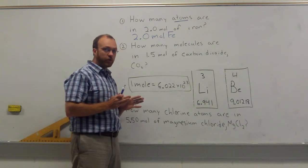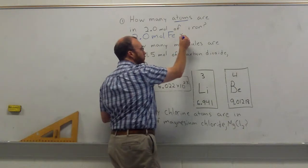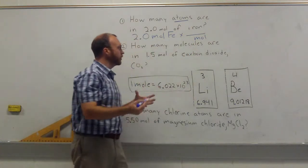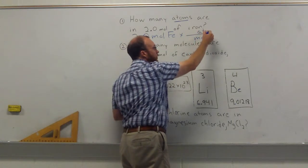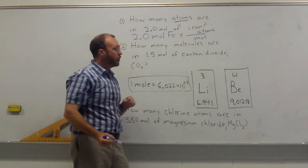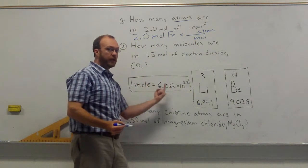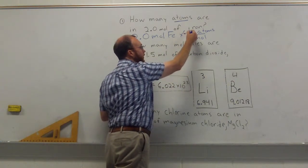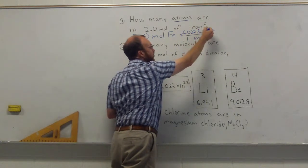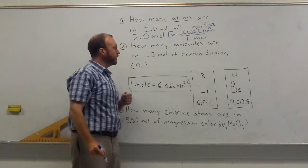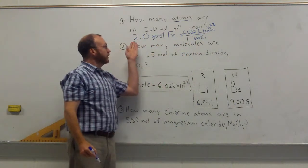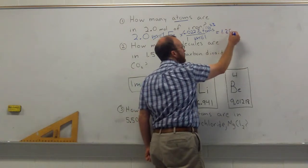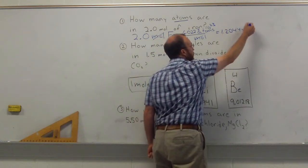We're going to set that up by unit analysis or dimensional analysis. We want to get rid of moles and switch from moles directly to atoms. What you have to know is how they're related — and they're related by definition. One mole is 6.022 times 10 to the 23rd atoms. So moles cancel, and we multiply out to get 12.044 times 10 to the 23rd, or 1.2044 times 10 to the 24th.